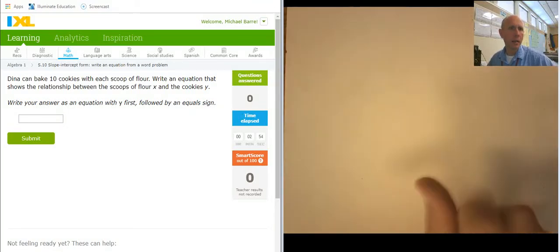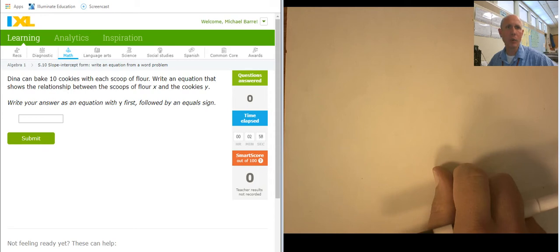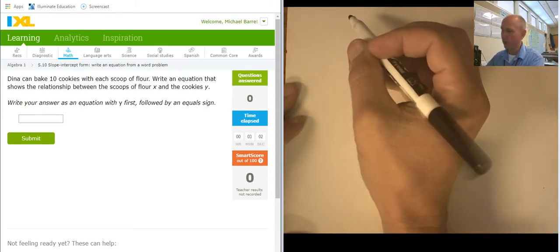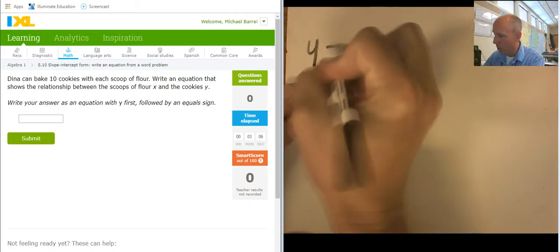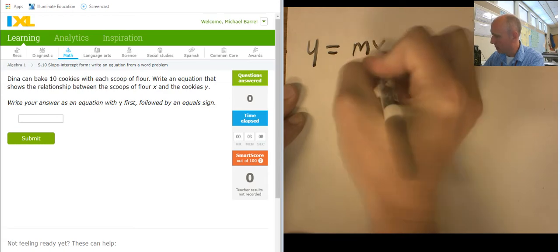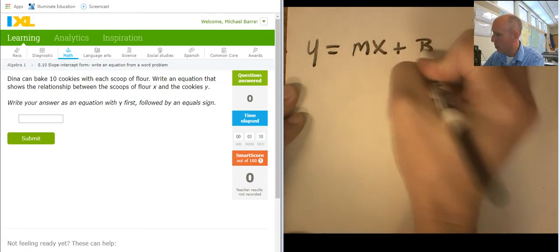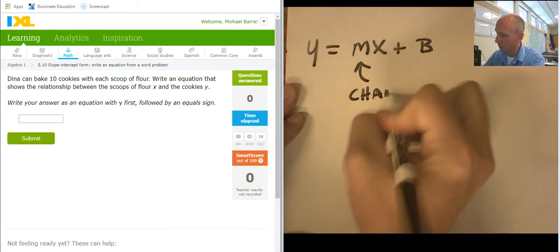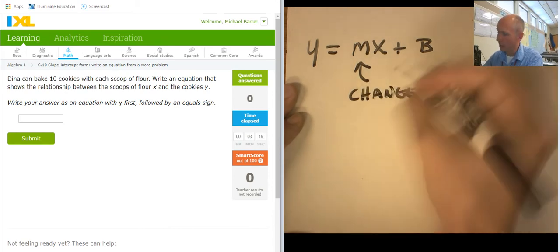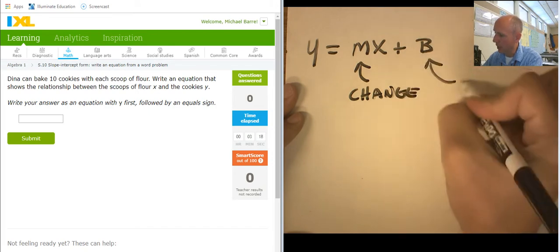Hey, it's Mr. Barr, and I am doing some iExcel homework. Let's see, slope intercept form, write an equation from a word problem. So we're looking at y equals mx plus b, where this is how it's changing, and the b is kind of the initial value.